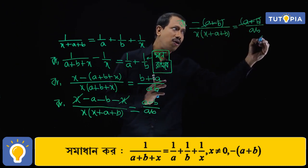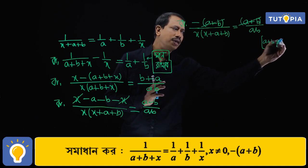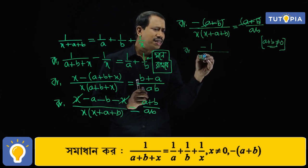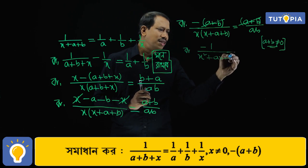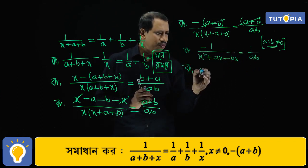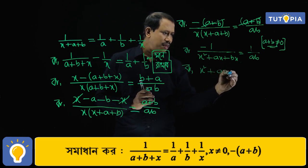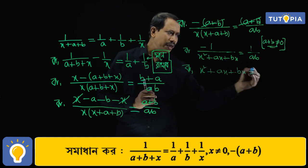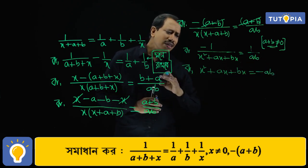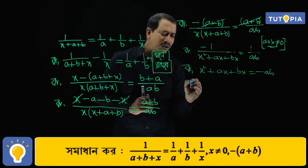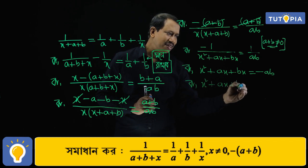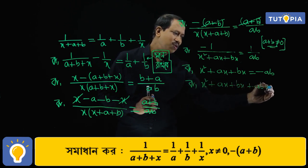If you want to write a plus b not equal to 0, then write a plus b not equal to 0. This simplifies to: x squared plus ax plus bx equals minus a minus b. And therefore: x squared plus ax plus bx plus ab equals 0.